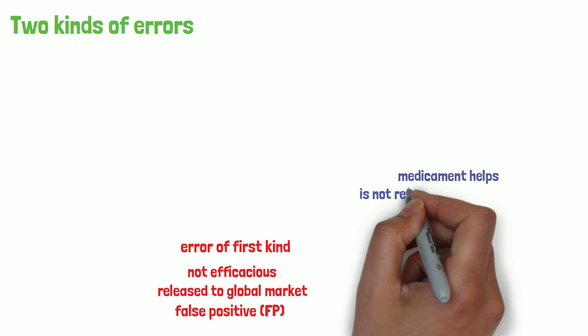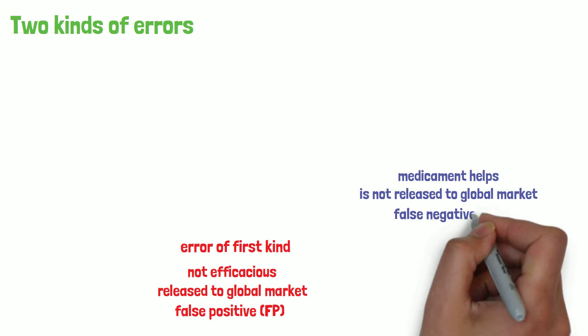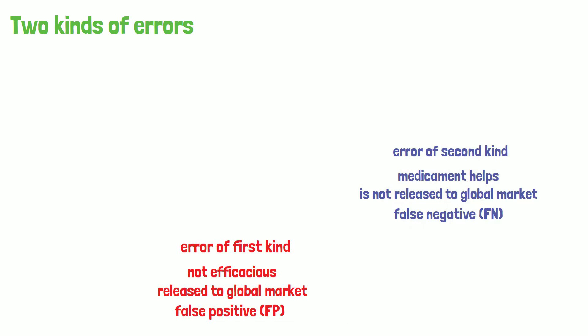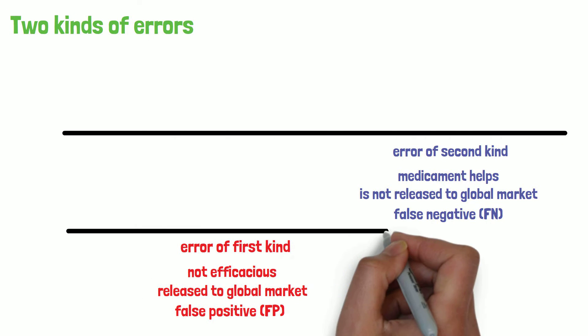The second error is exactly the opposite. A medicament that actually helps is not released to the market. That is also called false negative or error of the second kind.